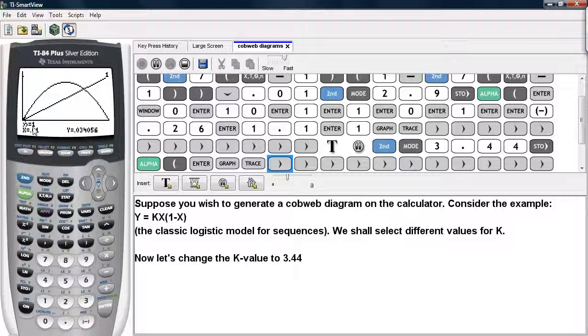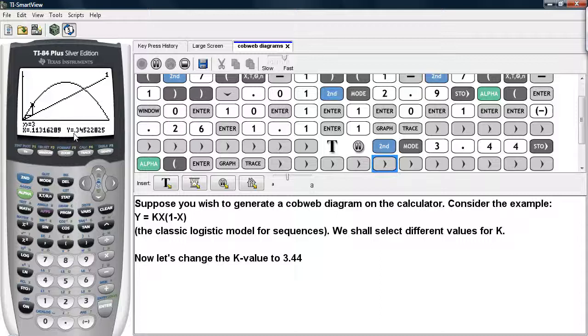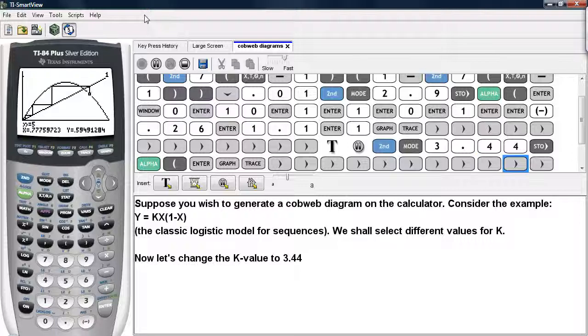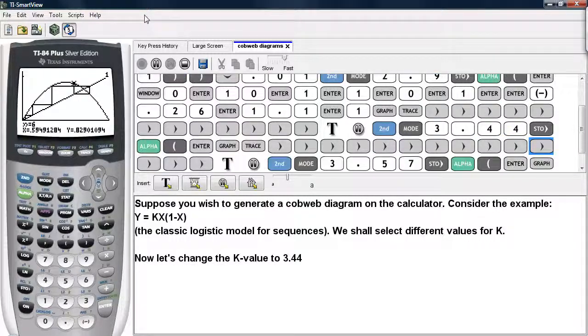Here we see the parabola is a little bit taller. We have our counter, our x and y coordinates on the actual parabola itself. We just keep hitting the right arrow button to progress through this stepping and we generate a cobweb diagram this way.